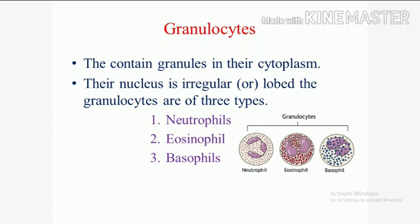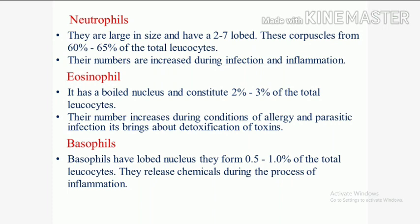Neutrophils are large in size and have two to seven lobes. These corpuscles form 60 to 65% of the total leukocytes. Their numbers are increased during infection and inflammation. Neutrophils are mainly increased during bacterial infections and inflammatory conditions.